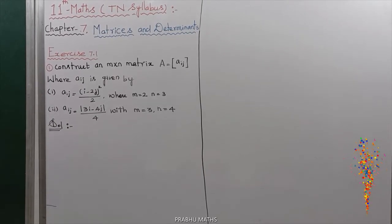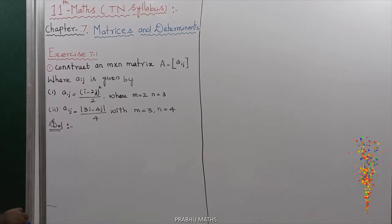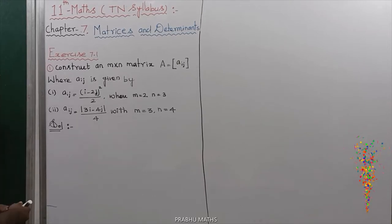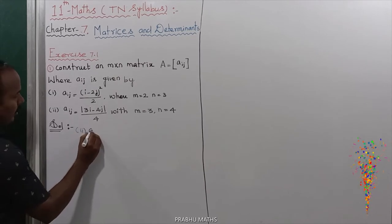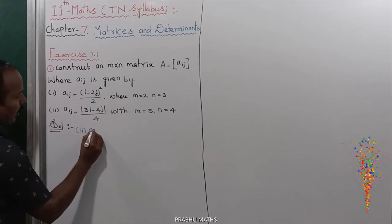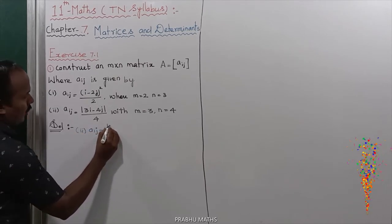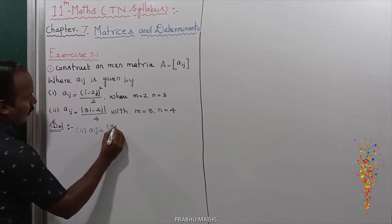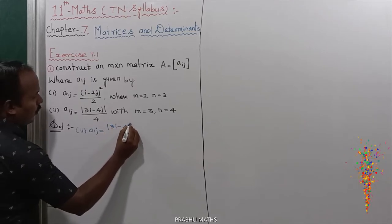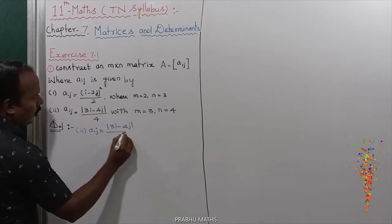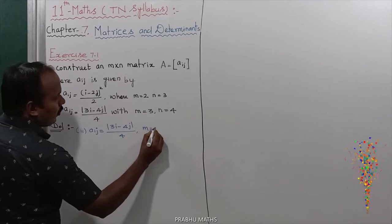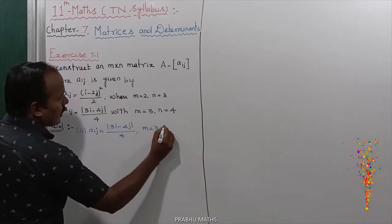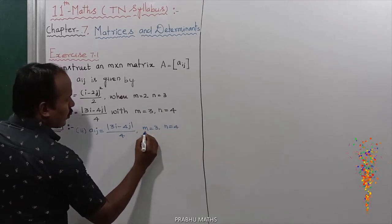Let's say question 7.1, second subdivision. The second subdivision defines A_ij equal to the modulus of 3i minus 4j, whole divided by 4. Next, m is equal to 3 and n is equal to 4.